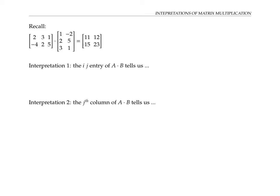Recall the mechanics of matrix multiplication. If we multiply A times B to get C, then to get the top left entry of the answer matrix C, we take the top row of A and multiply it by the left column of B one element at a time: two times one, plus three times two, plus one times three gives us 11. To get the entry in the first row, second column, we do the first row of A times the second column of B.